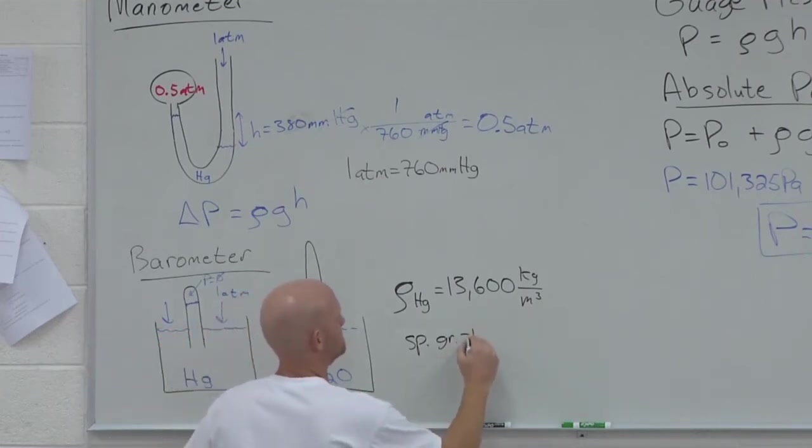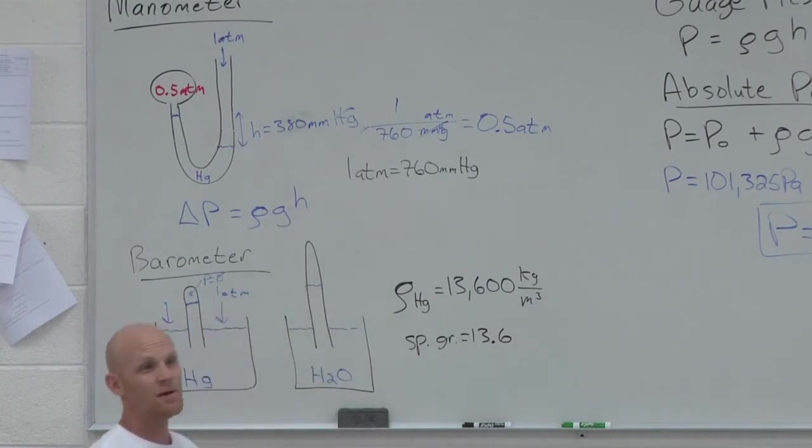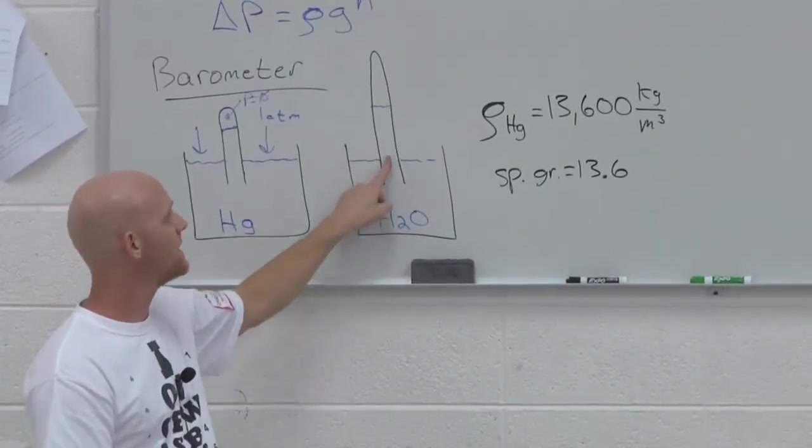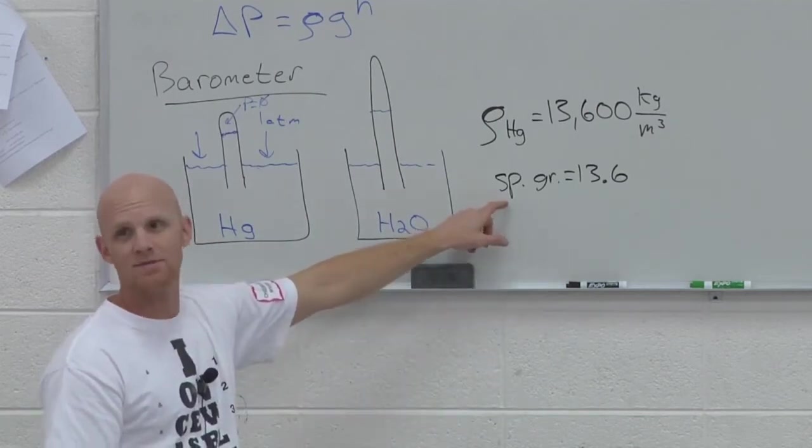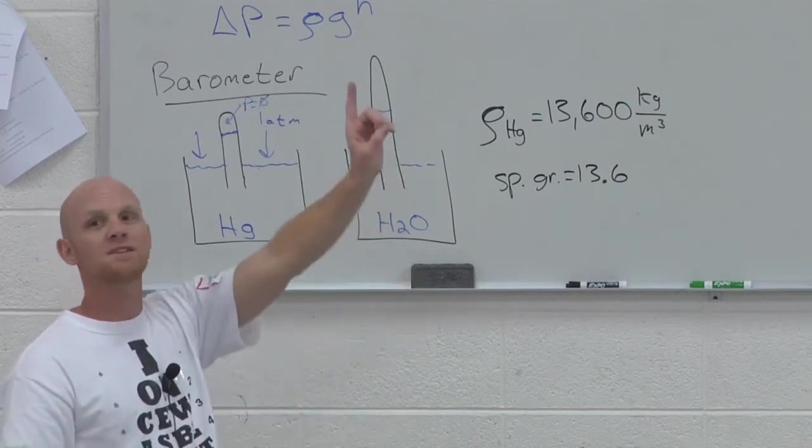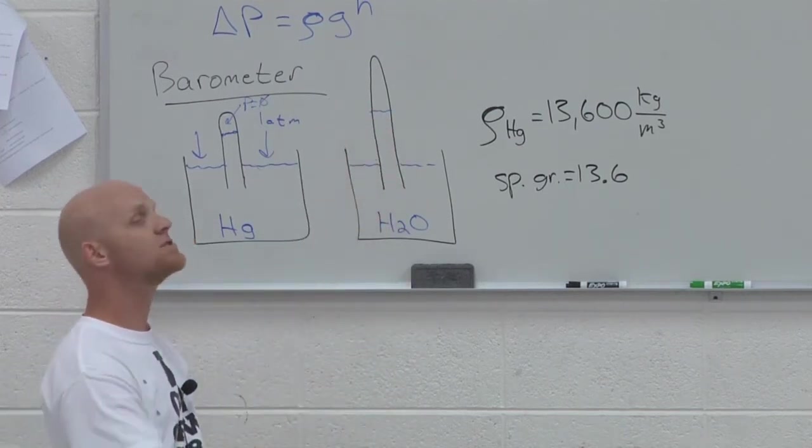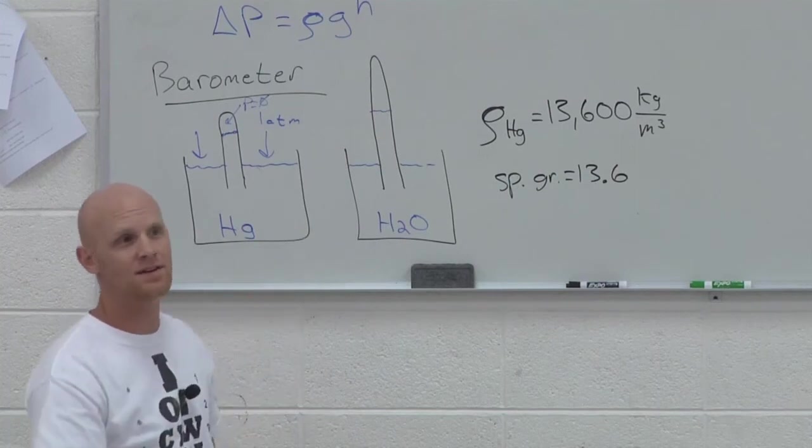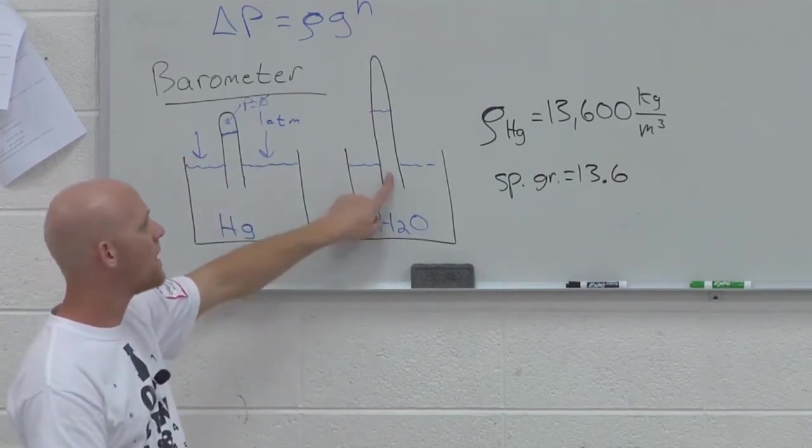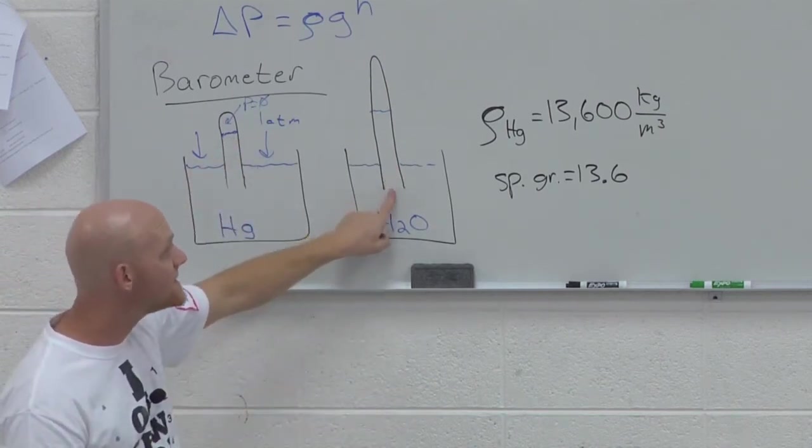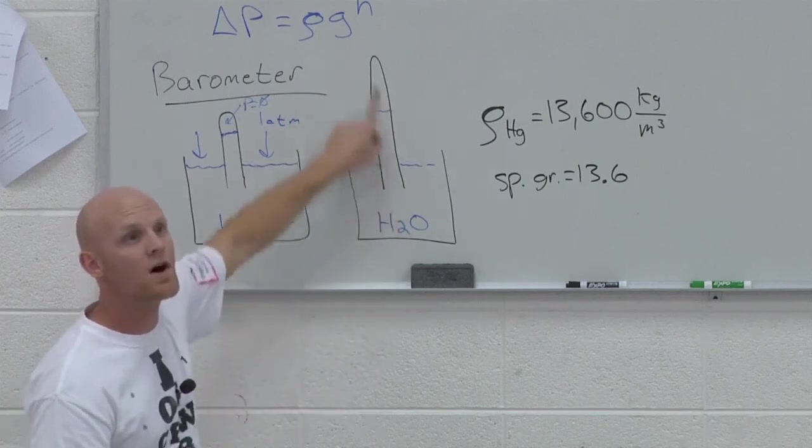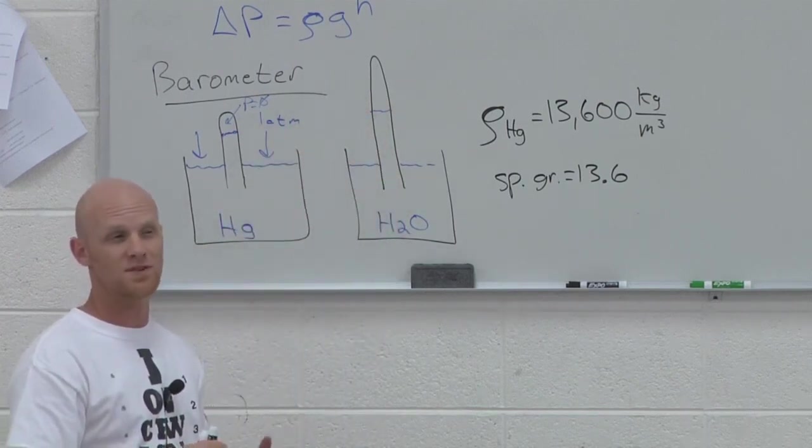Awesome. 13.6. That means it's 13.6 more times dense than water. Okay. So, you said you expected the water to rise higher. How much higher? 13.6 times higher. Mercury's got 13.6 times higher density, so water's gonna have to raise 13.6 times higher height. And the idea is, is that the weight of water supported by the column would be the same as the weight of mercury supported by the column. But it's gonna take 13.6 times more water to equal that same weight, since it's 13.6 times less dense.